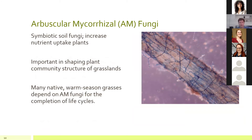In the southern Great Plains — most of Kansas, Oklahoma, and Texas — we have a dominance of C4 or warm season perennial grasses, and the vast majority of these grasses cannot complete their life cycle without an association with mycorrhizal fungi. Mycorrhizal fungi primarily uptake phosphorus, and reproduction in perennial grasses is extremely phosphorus limited, so these plants often don't reach reproductive maturity without this symbiosis.